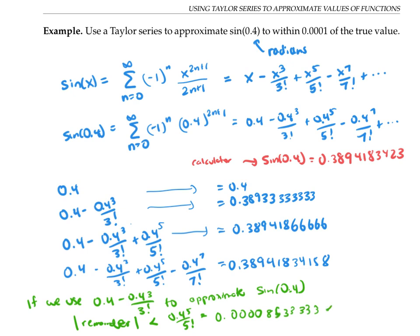So in fact, that's less than 0.0001. And so I know for sure that using just these first two terms, I can approximate sine of 0.4 with an error of less than my required accuracy of 0.0001.